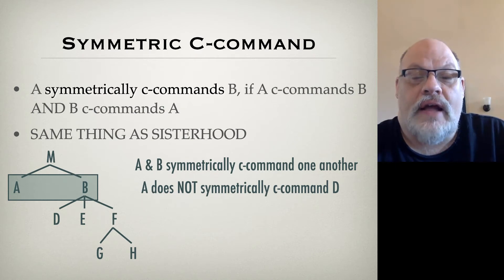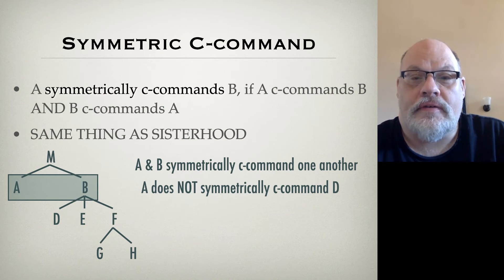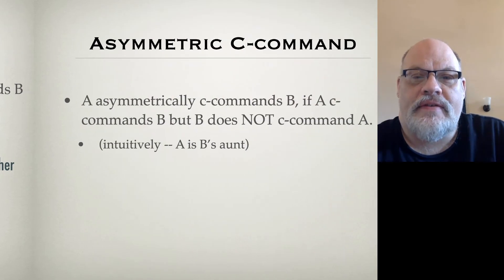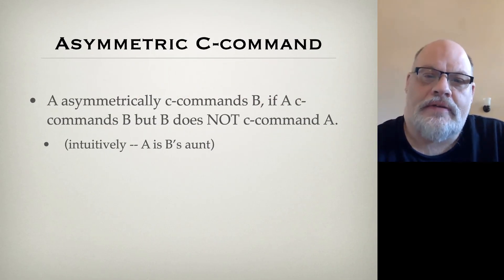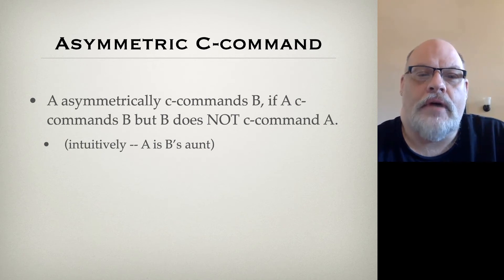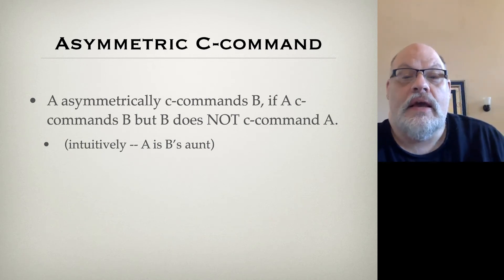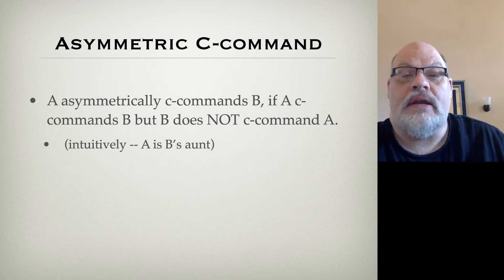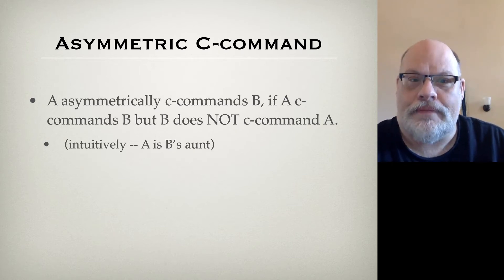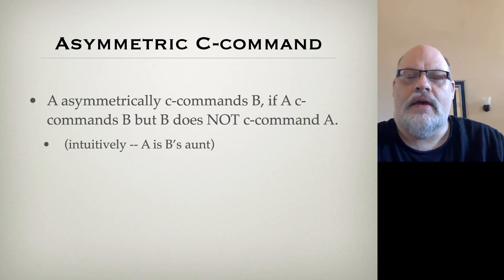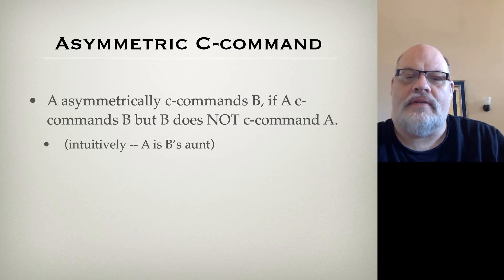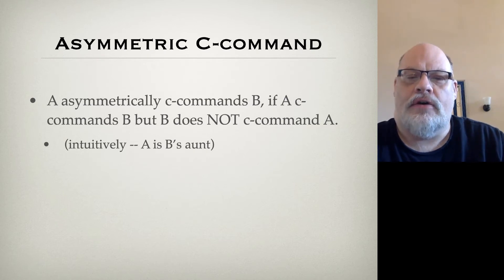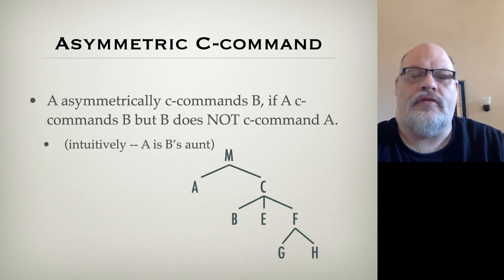Notice that A does not symmetrically C-command D, E, F, G, and H — those are not sisters. Asymmetric C-command is the reverse: A asymmetrically C-commands B if A C-commands B, but B does not C-command A. Intuitively, these are the cases where we have an aunthood or great-aunthood relationship.